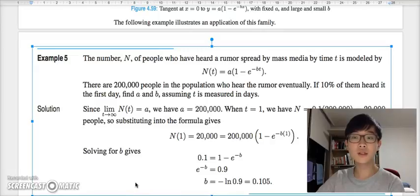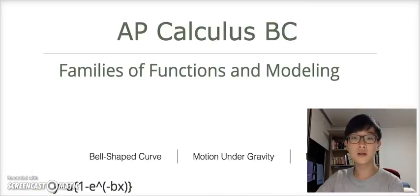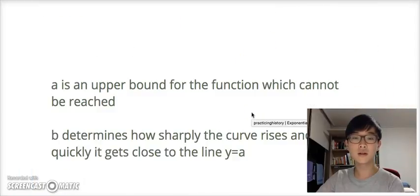Let's go over some key ideas from the exponential model with a limit. The value of a is an upper bound for the function which cannot be reached. The parameter b determines how sharply the curve rises and how quickly it gets close to the line y equals a.